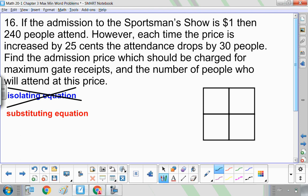So if we have the admission to a sportsman show is a dollar, then 240 people attend. So we have 240 people that pay a dollar. So right now we're making $240.